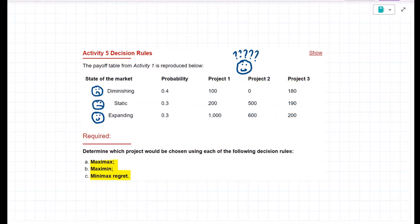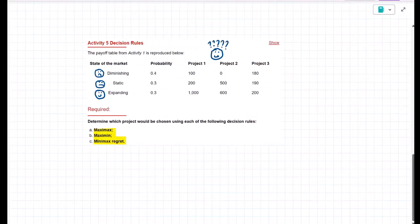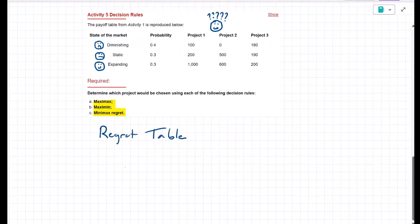The final decision rule to consider here is mini max regret. That's the decision rule for the sore loser. It's also the trickiest of these three. So let's dive into that. The first thing that we'll do is reproduce the column headings and the rows. And we're going to build a new table that we will call a regret table.